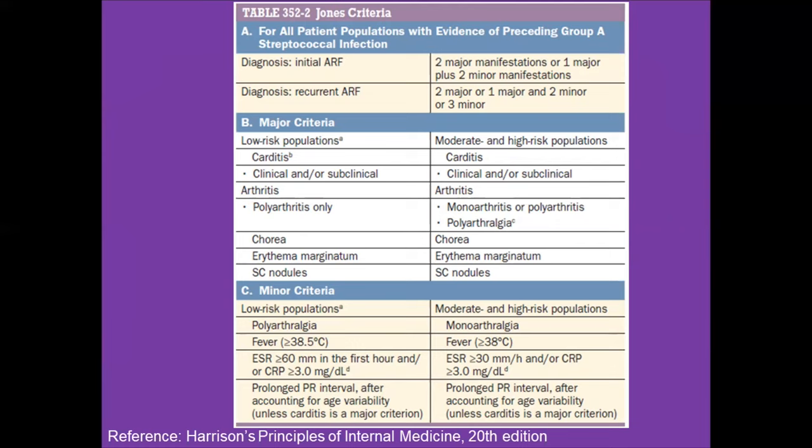For the major criteria in low-risk populations: carditis, polyarthritis, chorea, erythema marginatum, and subcutaneous nodules. For moderate-to-high-risk populations where ARF prevalence is high, carditis, arthritis — even monoarthritis — polyarthritis, or polyarthralgia come under the major criteria.